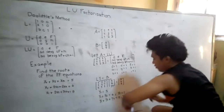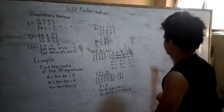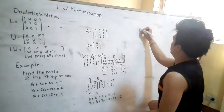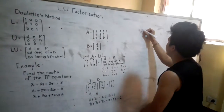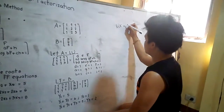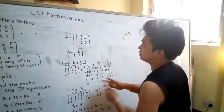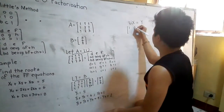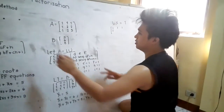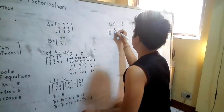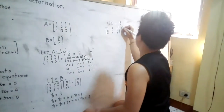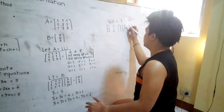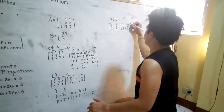After getting the values of Y, we will now solve for the values of X, which are the unknowns in the original equations. We will use the upper triangular matrix times the unknown X, set equal to Y. Using the upper triangular matrix pattern, D is equal to 1, E is equal to 1, F is equal to 1 — just copy the zeros — and G is equal to 1, H is equal to 1, and I is equal to 1, multiplied by the unknowns X. By the way, LU factorization is used for square matrices only.